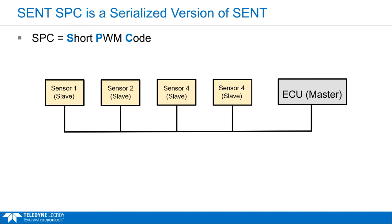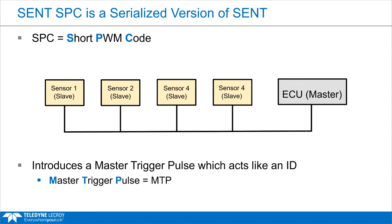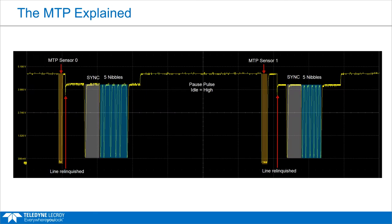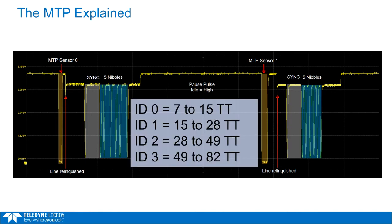SENT SPC achieves this by introducing a new element into the SENT frame definition: the master trigger pulse, abbreviated as MTP. The master trigger pulse is the key to managing SENT SPC traffic. Each sensor is assigned a unique MTP length,